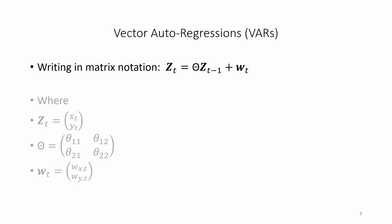We are interested in how x and y are related to themselves in previous periods and this is shown by the matrix of regression coefficients theta. Wt is the corresponding vector of error terms.